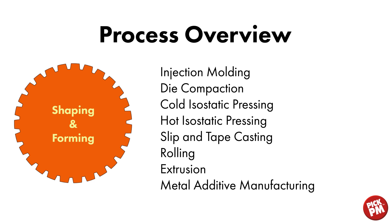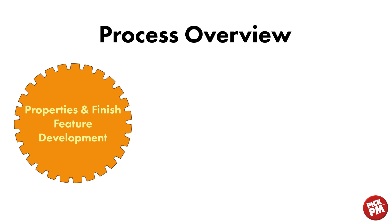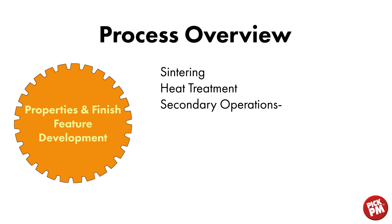After shaping and forming, properties and finished feature development are achieved. Sintering is the forming of strong metallurgical bonds in the shaped PM components. Heat treatment and secondary operations such as various machining, deburring, grinding, sealing, and plating are also performed. The industry supply chain is made up of powder producers, part fabricators, PM-related machine tool manufacturers, engineering and consulting, tool making, marketing and sales, research, and end users of PM components.